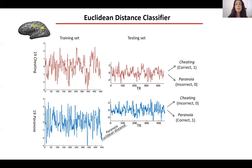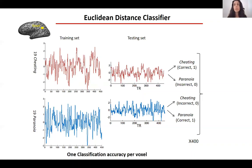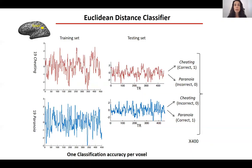We repeated this procedure 400 times, each time leaving out two different subjects from the group of 40 participants. This resulted in one classification accuracy value per voxel.